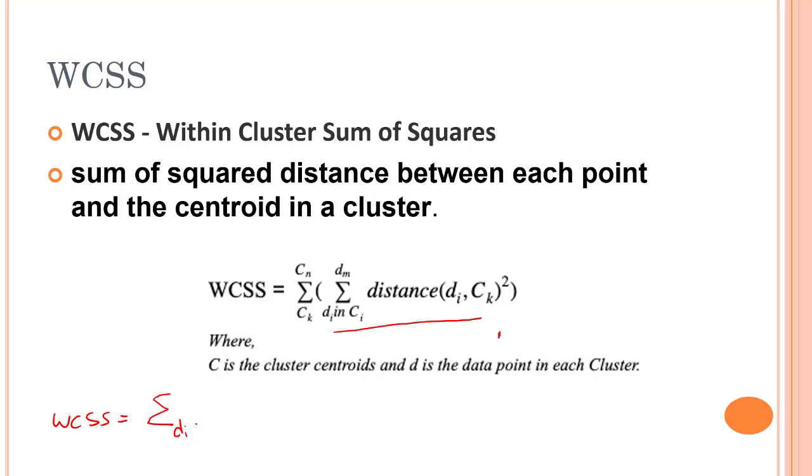That will be in cluster one. From cluster one, we have to find out the distance of Di, that is all the data points in cluster one. Similarly, we will move into the second cluster, if you have two clusters, cluster two, and then we will find out the distance, that is Di, all the data points inside of cluster two, squared. Similarly, it will move on to the end of it.